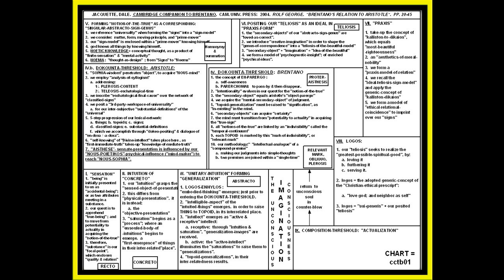Now we move on to the all-important decuntia threshold. Aristotle used the concept of en par ergo, which means self-awareness. Or if we look at the Greek par erchimai, it means to pass by and then disappear. This is where intentionality evolves in our quest for the notion of the true. The secondary object equals Aristotle's object par ergo. We acquire the mental secondary object of en-judgment, and topoid generalization must be raised to signification as in-existing in the mind. It is the secondary objects that can acquire certainty for Brentano.